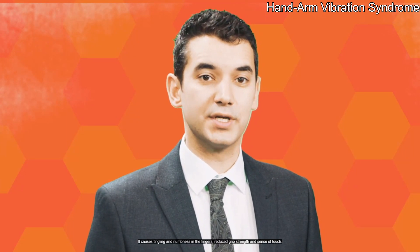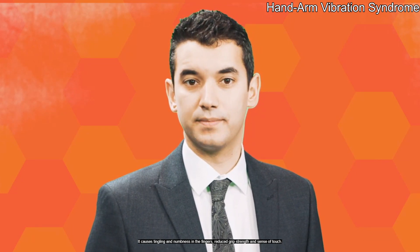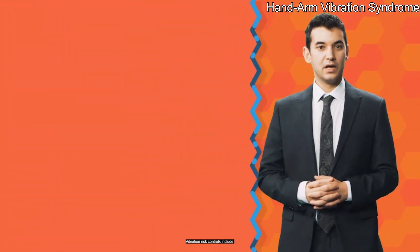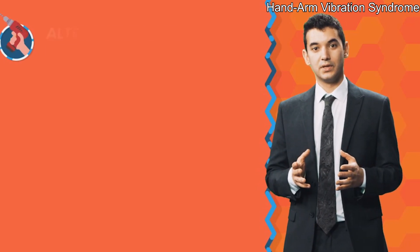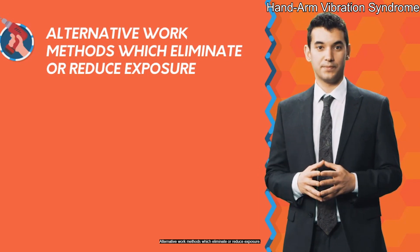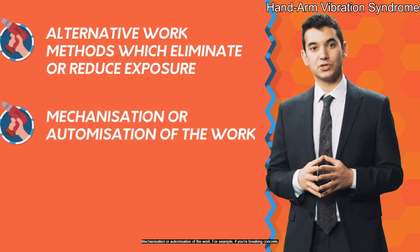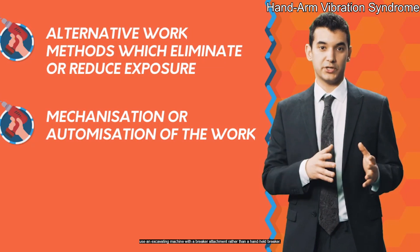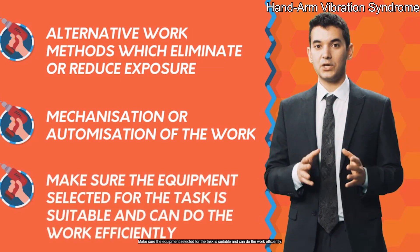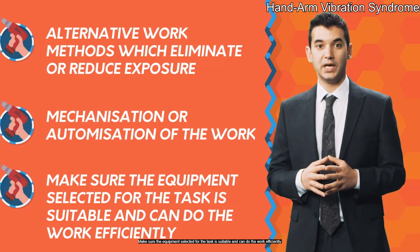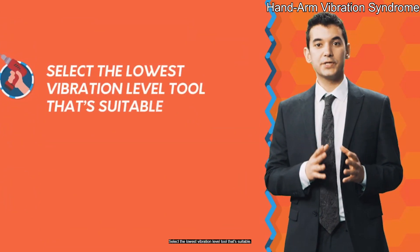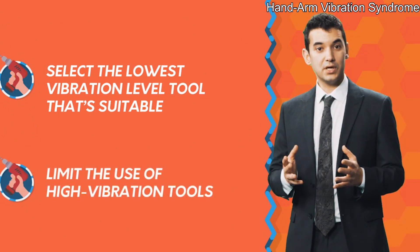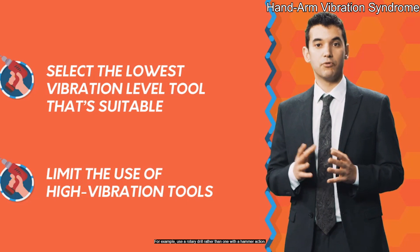HAVS causes tingling and numbness in the fingers, reduced grip strength and sense of touch. It also affects the blood circulation, which can result in vibration white finger. Vibration risk controls include alternative work methods which eliminate or reduce exposure, and mechanisation or automation of the work. For example, if you're breaking concrete, use an excavating machine with a breaker attachment rather than a hand-held breaker. Make sure the equipment selected for the task is suitable and can do the work efficiently. Select the lowest vibration level tool that's suitable and limit the use of high vibration tools — for example, use a rotary drill rather than one with a hammer action.